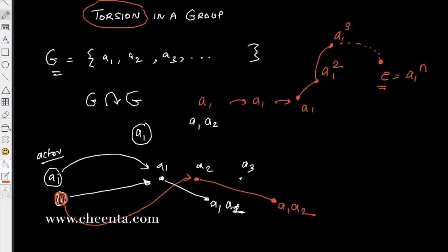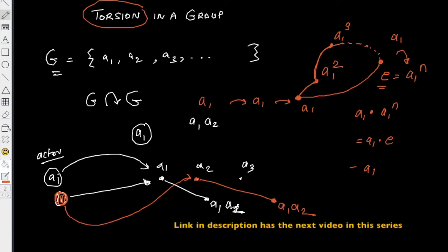After you reach identity, if you hit it by a1 again, then you are back at this point, because a1 times a1 to the power n is a1 times identity, which is a1 again. So you sort of complete the loop.